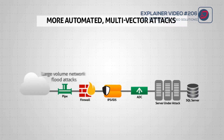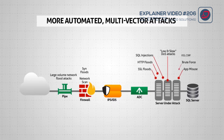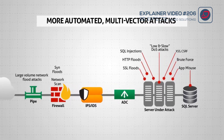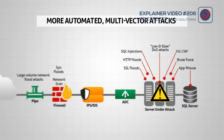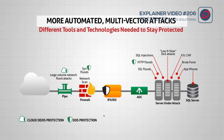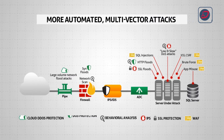Attackers use more automated methods, leveraging multiple attack vectors in parallel to find an organization's blind spot and bring down data centers and applications. Even if only one vector goes undetected, the attack is successful and can be highly destructive. Organizations need to implement different tools and technologies, including DDoS protection, behavioral analysis, IPS, SSL protection, and a web application firewall to stay protected.